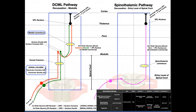Forgetting the details for a moment: the first-order neurons relay information from a sensory receptor into the nervous system. That first-order neuron synapses with a second-order neuron, which then synapses with a third-order neuron. It's always the third-order neuron — shown here in black at the top — that relays information to the cortex of the brain, specifically the somatosensory cortex. All three pathways are set up as this three-neuron system: first-order, second-order, and third-order.